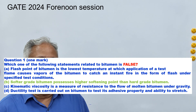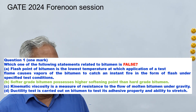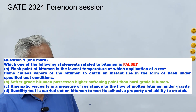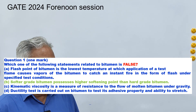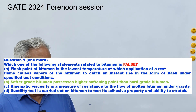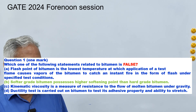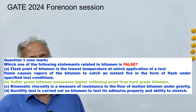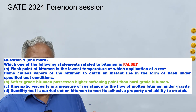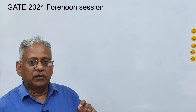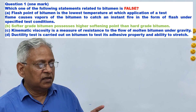The first question asks which one of the following statements related to bitumen is false. The first statement is: flash point of a bitumen is the lowest temperature at which application of a test flame causes vapors of the bitumen to catch an instant fire in the form of flash under specified test conditions. This is the definition of flash point — the temperature at which vapor will momentarily catch fire — so this statement is true.